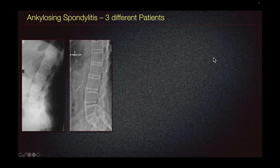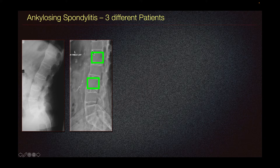After the sacroiliac joint, the thoracolumbar spine is the second most commonly affected. Here we can see the squaring of the vertebral bodies and also some flowing syndesmophytes, which are typical of ankylosing spondylitis.